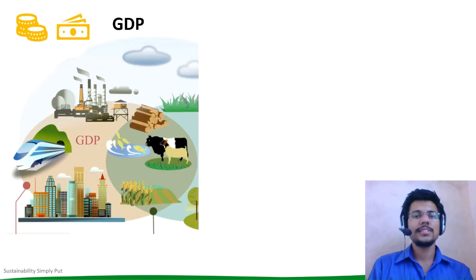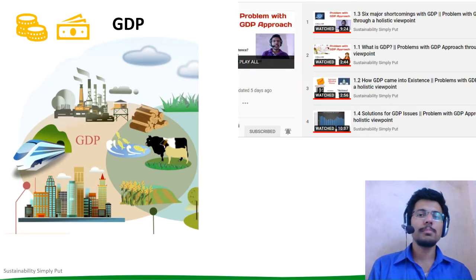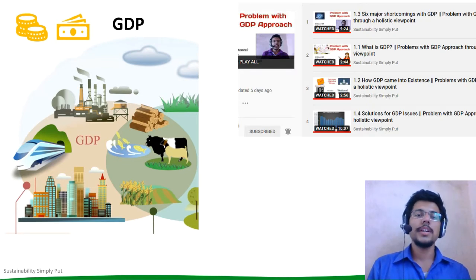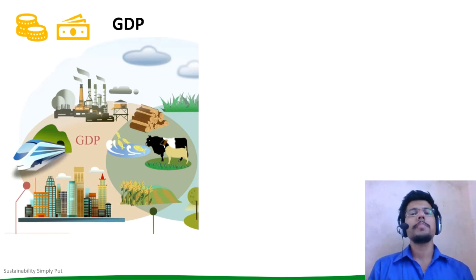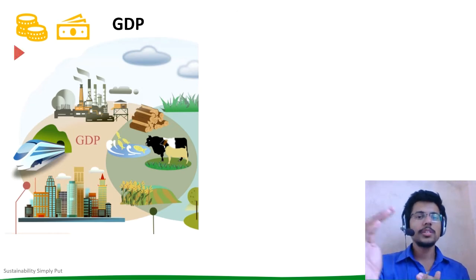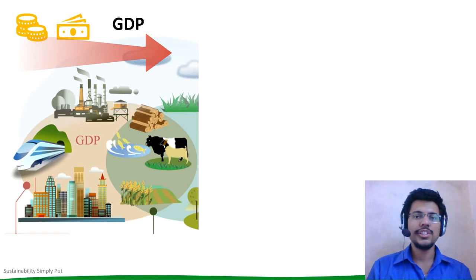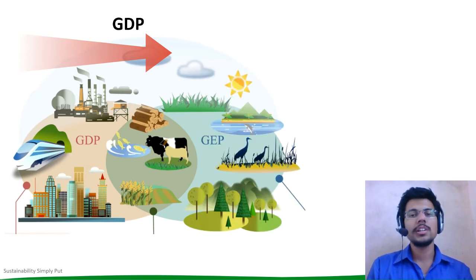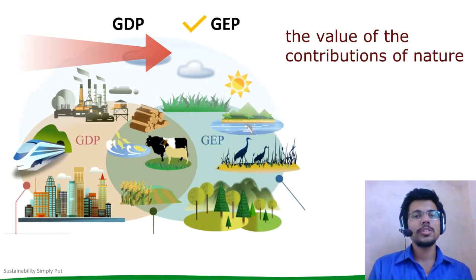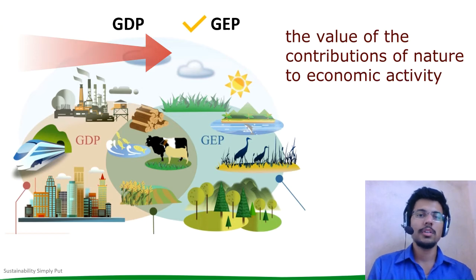In our previous series, namely 'Problem with GDP approach through a holistic viewpoint', we have seen in detail that in order to achieve sustainable development, there is a pressing need to move beyond conventional economic measures like GDP or Gross Domestic Product. In that effort, Gross Ecosystem Product or GEP is a measure that summarizes the value of contribution of nature to economic activity.